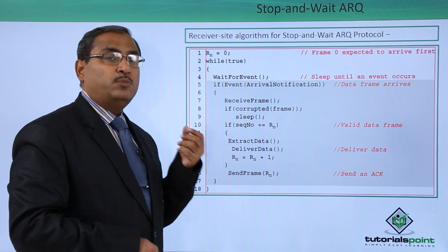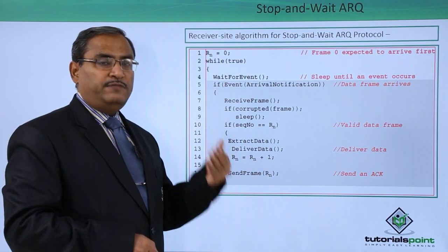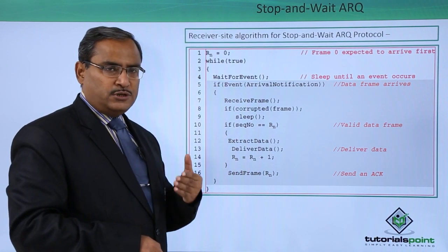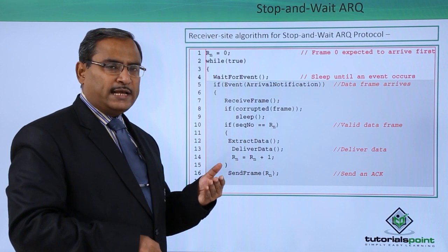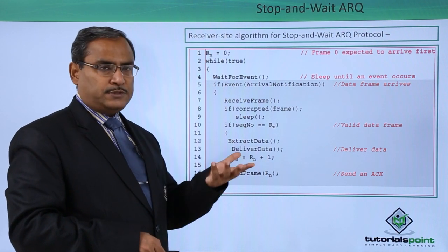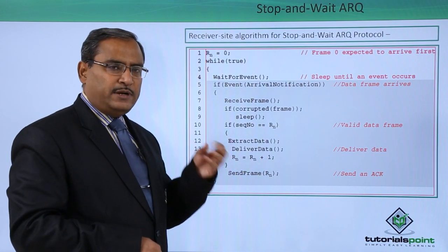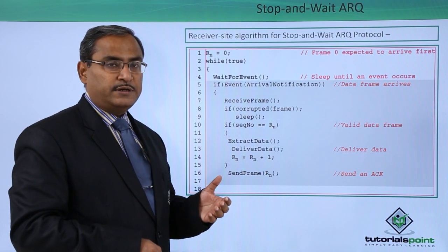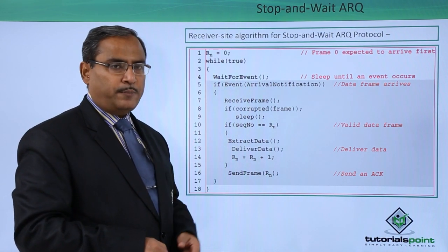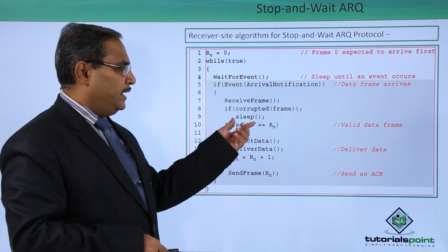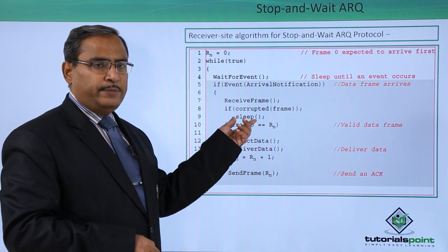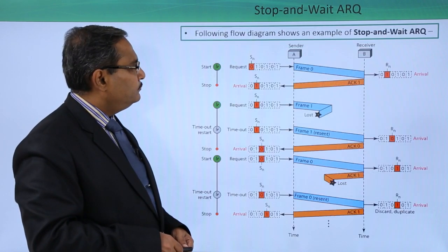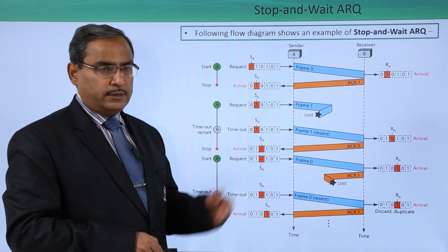If the data frame is corrupted, sleep — meaning no acknowledgement is sent. Since the sender is working with a timer, the sender will understand that as the acknowledgement has not been received, either the frame sent was lost somewhere in the network, or the frame received by the receiver was corrupted and erroneous. That is why there is no need for a negative acknowledgement to be sent from receiver to sender.